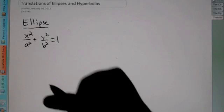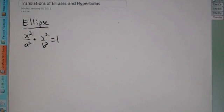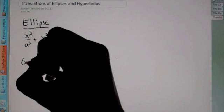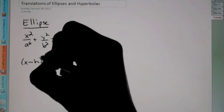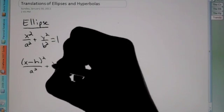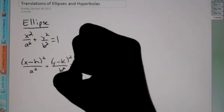Well, what if the center is not at the origin? Then, how we treated the circle with h and k, that applies now. So now this becomes x minus h squared over a squared plus y minus k squared over b squared equals 1.